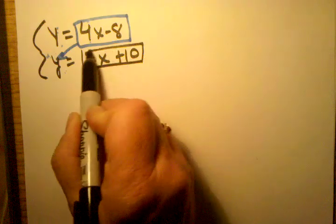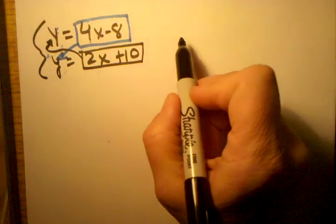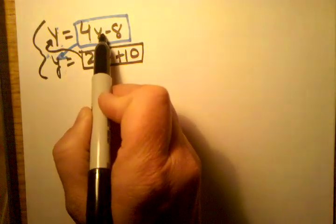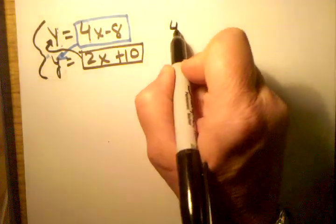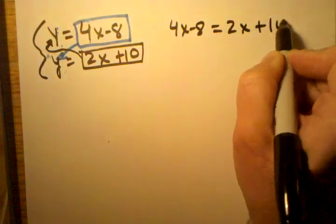Or I can do the reverse. I can take what this says y equals, which is 2x plus 10, and I can substitute it in to that y. Doesn't matter which one I do. Either way, I'm going to end up with this equaling that. So I'm going to go ahead and take the blue and substitute it into this y. And what I will get is 4x minus 8 equals 2x plus 10.